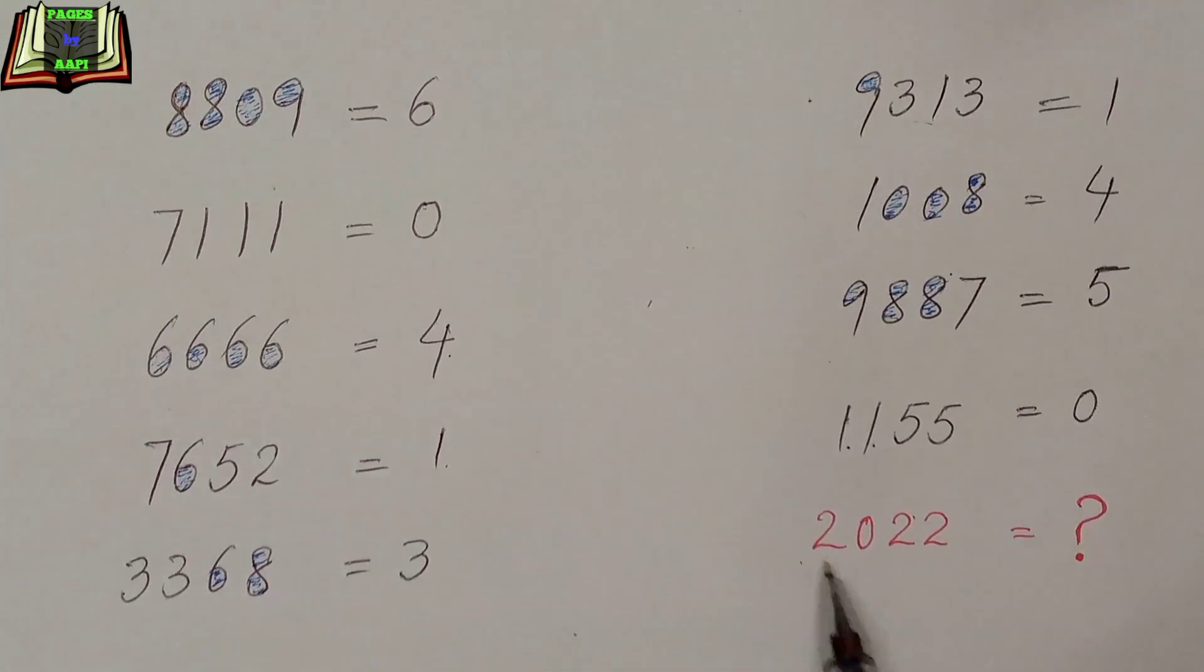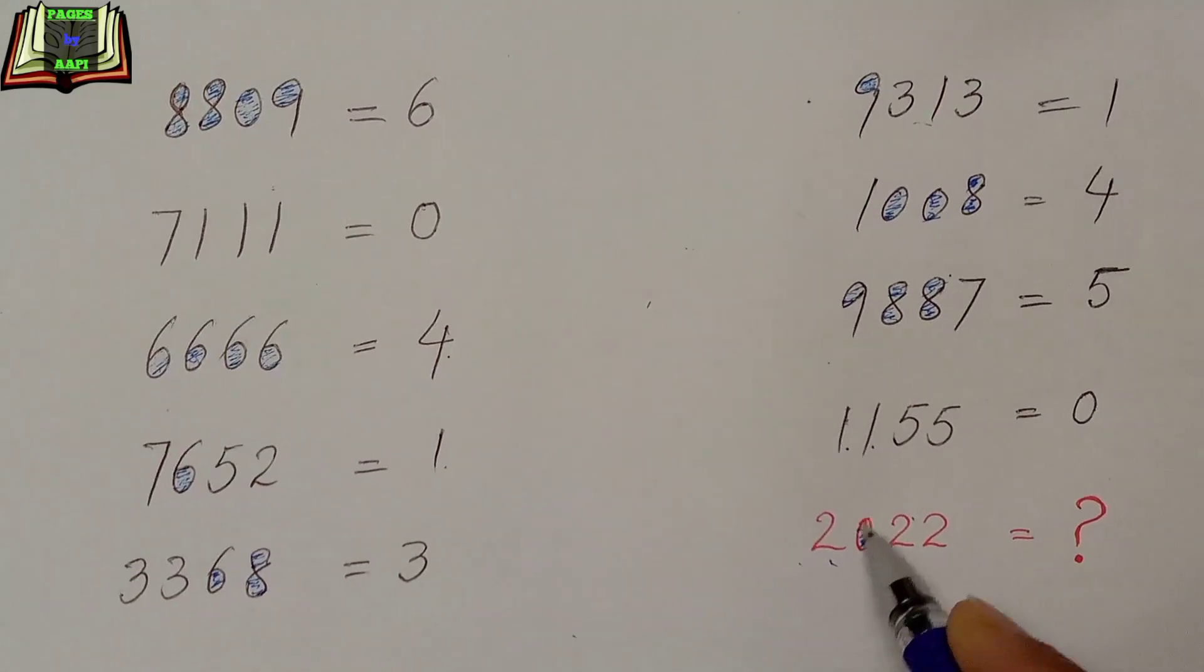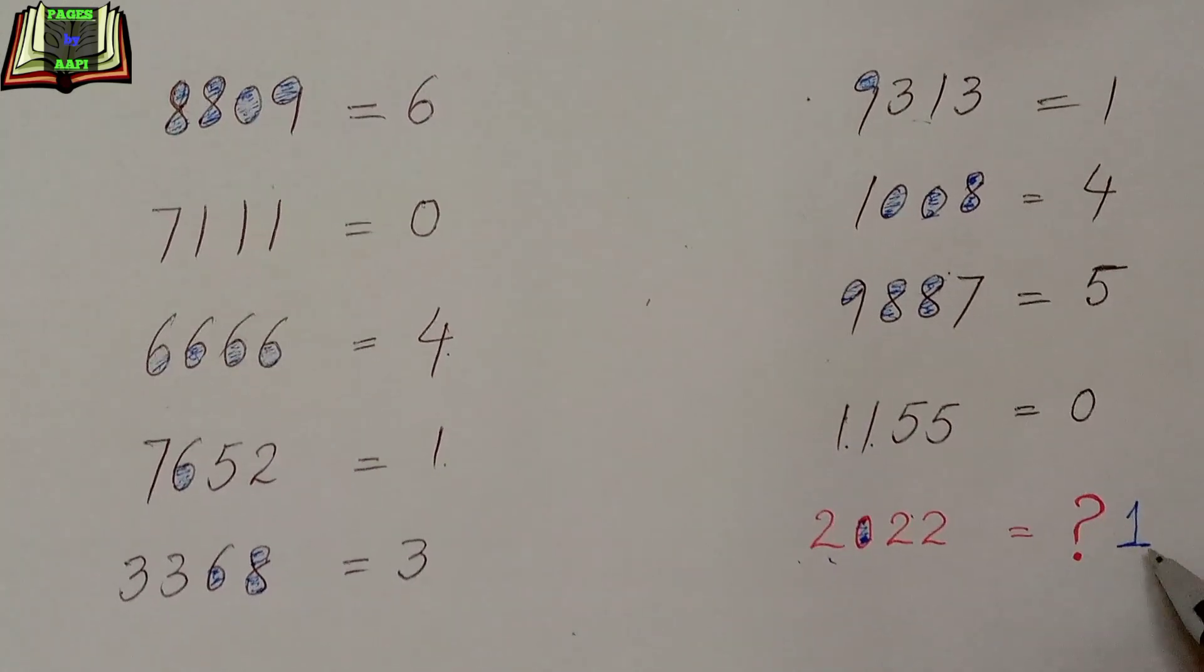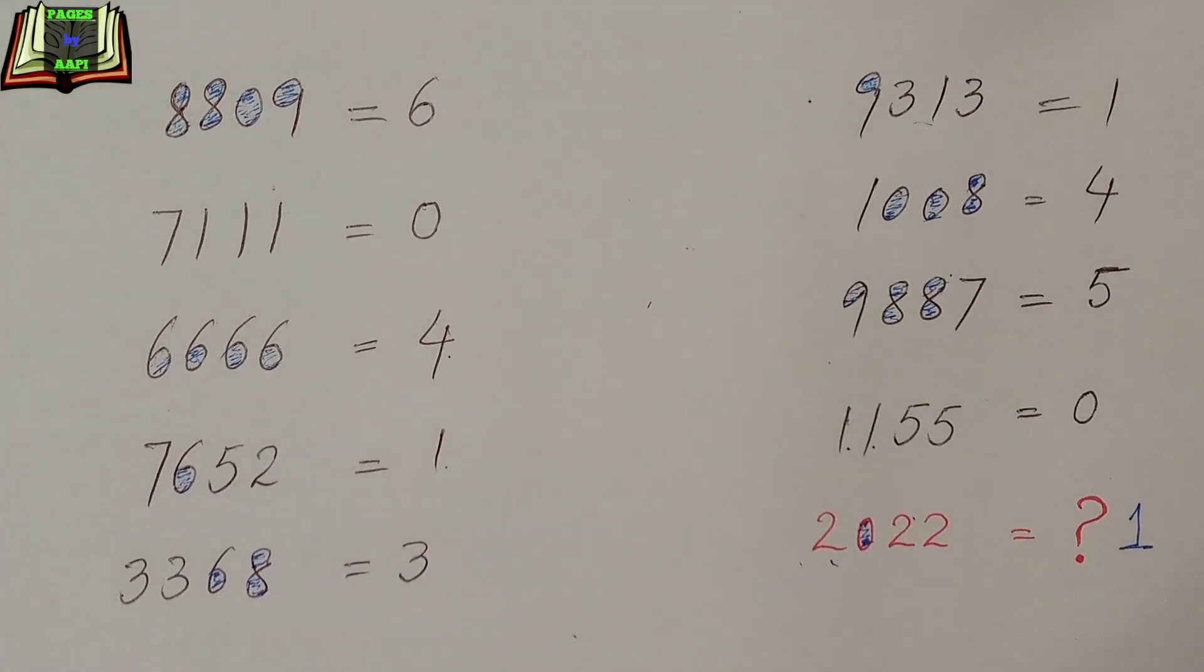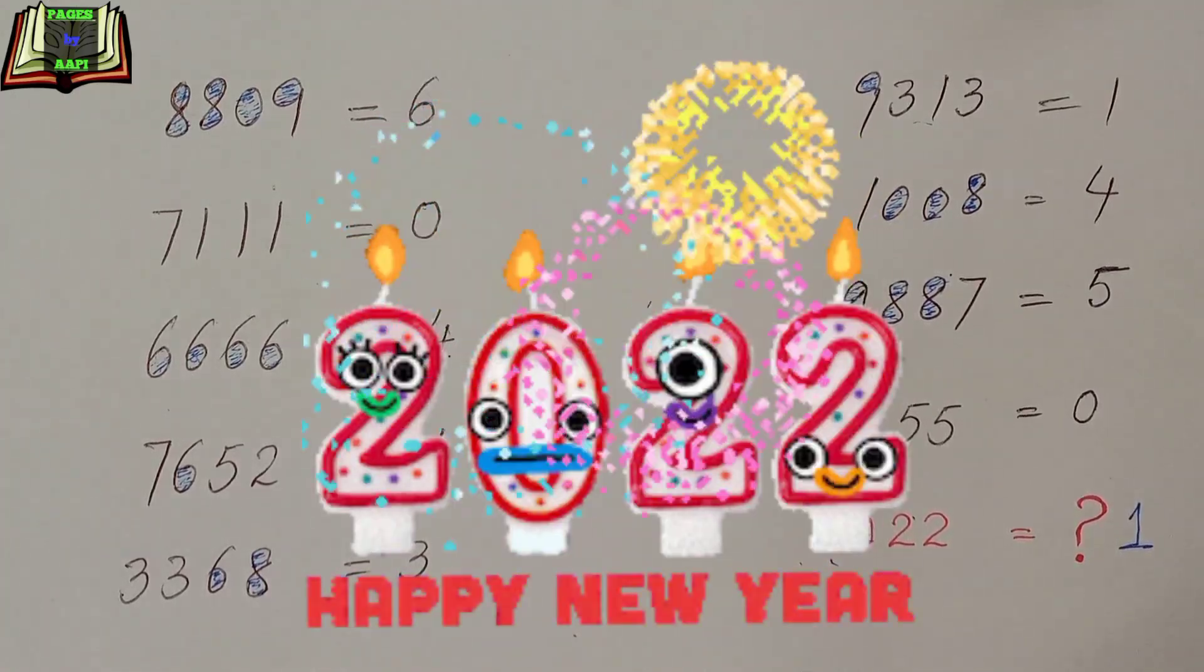And now you can easily find out the unknown, because there is only one circle. That is why the number 2022 is equal to 1. Hope you liked the video. Wishing you a very happy new year 2022.